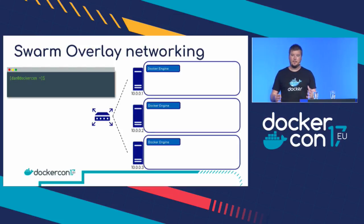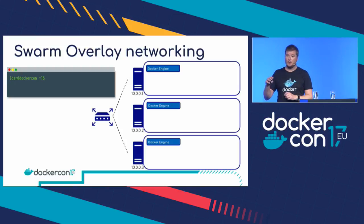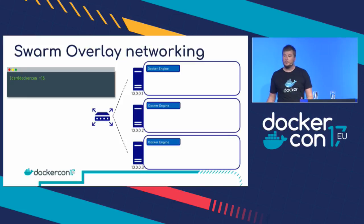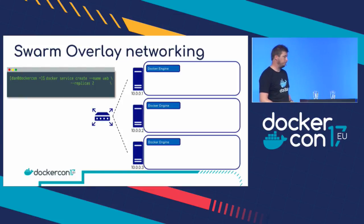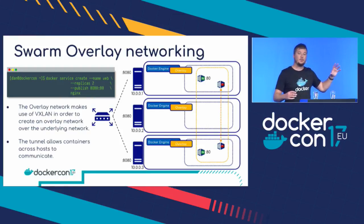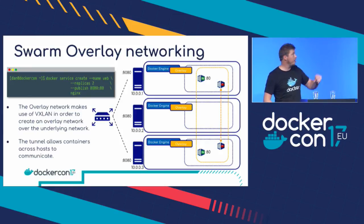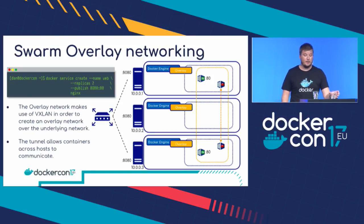Bridge and host networking are single-host only. If you have containers on host one and containers on host two, how do they speak to one another? That technology is overlay networking, which comes as part of swarm. When you create a cluster and do a swarm join, every node becomes part of the overlay network. You can create one with `docker network create -d overlay <name>`, or simply do a `service create` which automates creating the overlay network and creating containers on top of it.